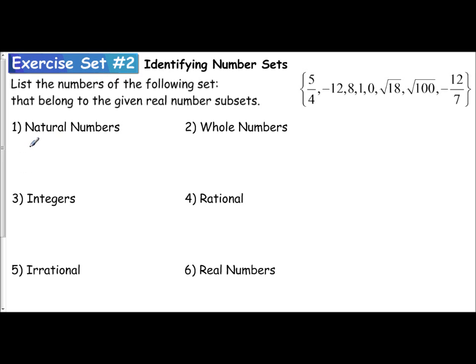Your natural numbers are your counting numbers, which means they start at 1 and count up to 2, 3, all the way up to positive infinity. So if we take a look at this list of numbers, 5 fourths is not a counting number, negative 12 is not a natural number, but 8 is a counting number. It's in that list, so I know 8 is part of the natural numbers.